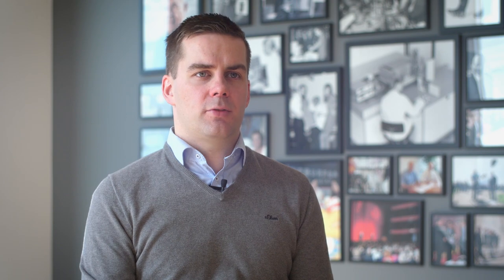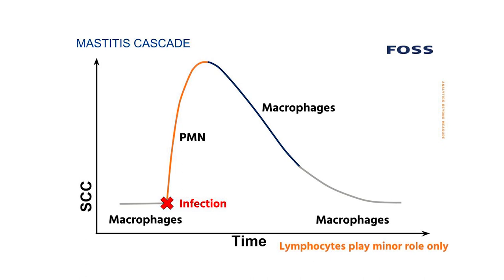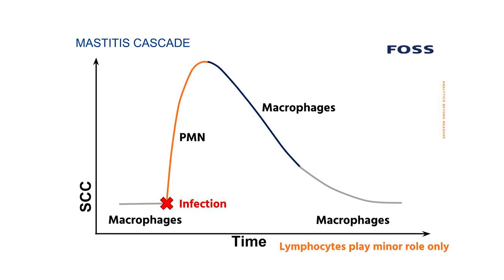When a cow is healthy, the somatic cell count would be low — for example at 30,000 or 50,000 cells per milliliter — and the cells at this stage consist mainly of macrophages. The macrophages have surveillance functions, meaning they are checking for abnormalities.